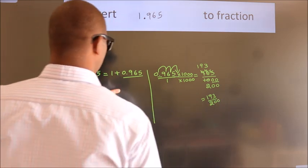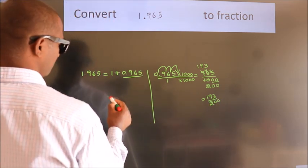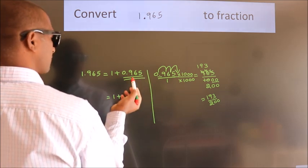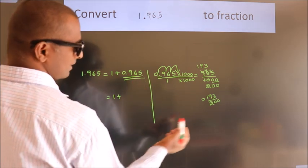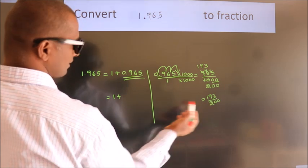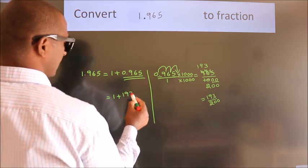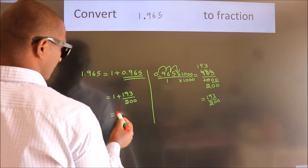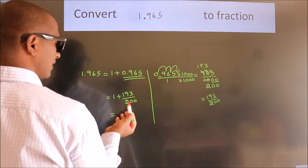Now here, 1 plus in place of 0.965, we write this fraction 193 by 200. 1 plus 193 by 200.